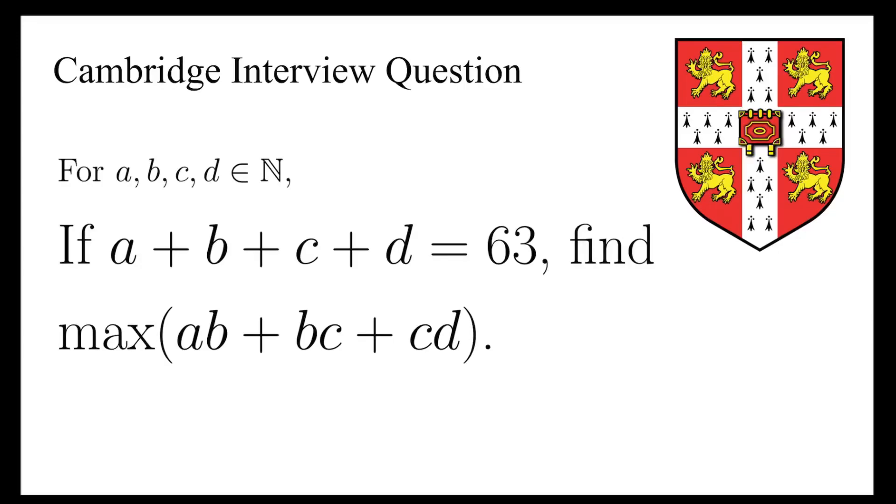In this video, we're going to take a look at the maths question that appeared in an interview at Cambridge. It says for natural numbers A, B, C and D, if the sum of these four numbers is 63, find the maximum of AB plus BC plus CD.